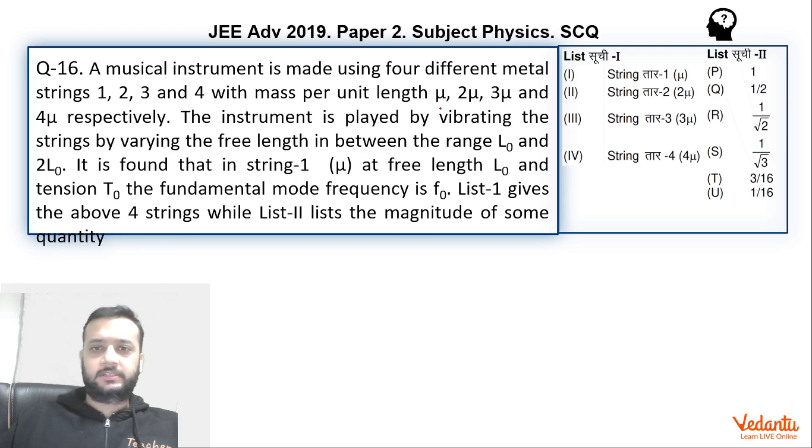The passage describes an instrument with four strings, each having different mass densities: mu, 2 mu, 3 mu, and 4 mu. The length of each string can be changed from L0. If we talk about the first string with tension T0 and length L0, then the fundamental frequency of the first string is F0.